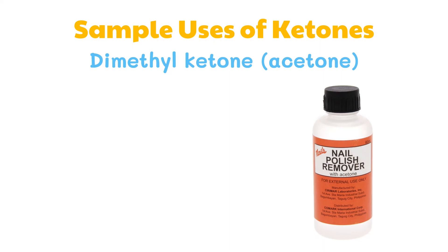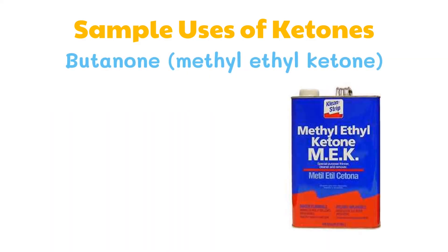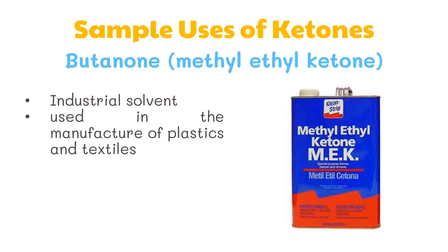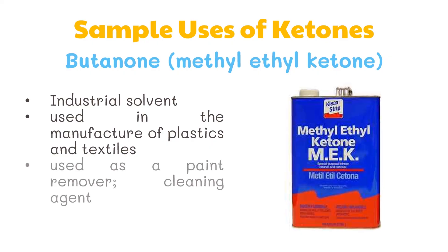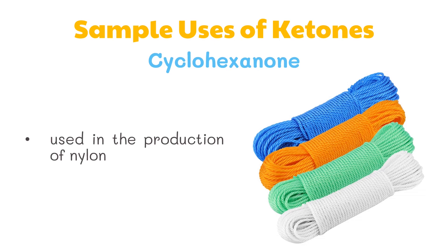Dimethylketone, or acetone, is used as a solvent for lacquer, acetylene, plastics, and varnishes, and as a paint and varnish remover. Butanone, or methyl ethyl ketone, is an industrial solvent used in the manufacture of plastics and textiles. It can also be used as a paint remover and cleaning agent. Lastly, cyclohexanone is used in the production of nylon.